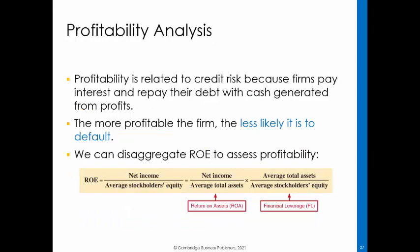Profitability is related to credit risk because firms pay interest and repay their debt with cash generated from profits. The more profitable a firm is, the less likely it is to default on its debt. In prior modules, we discussed how to analyze a firm's profitability using return on equity and its components, return on assets, and financial leverage. We use this framework to analyze profitability for credit risk as well. This slide shows the return on equity, return on assets, and financial leverage for Home Depot for 2017 through 2019.